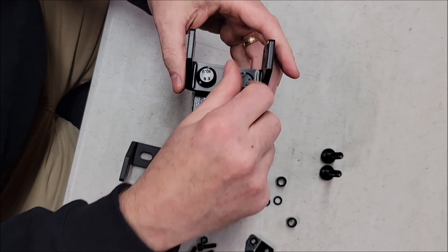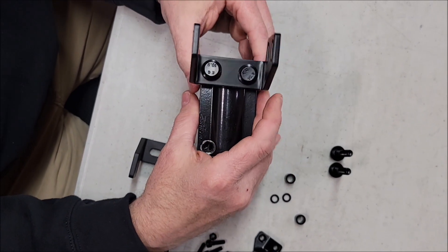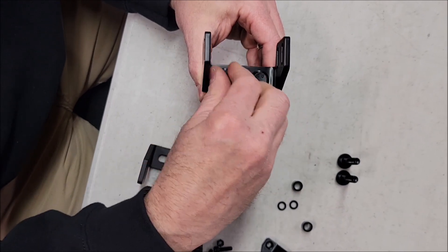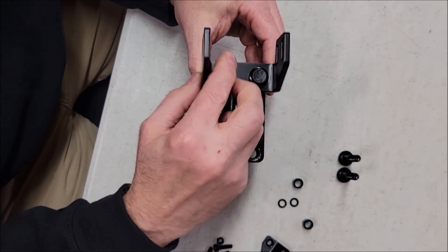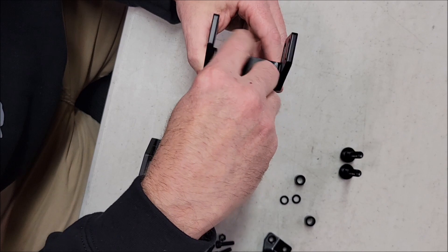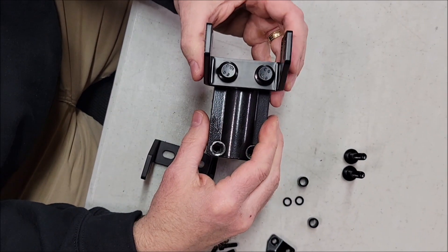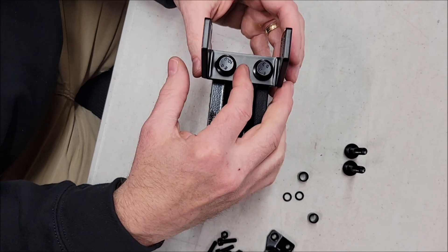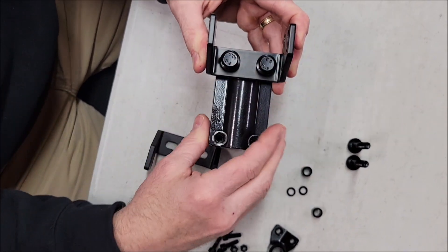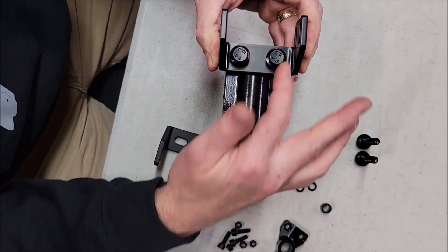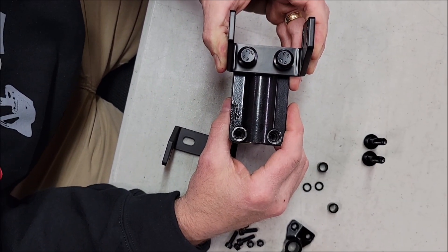Once you have it started, take a razor blade and cut those O-rings off. That's what they're meant to be used for, just to hold the spacers in place. Now we've cleared the hump and you can tighten those bolts down.